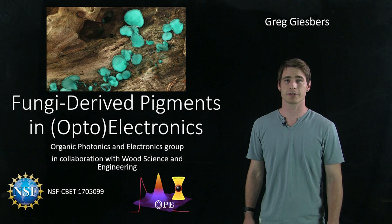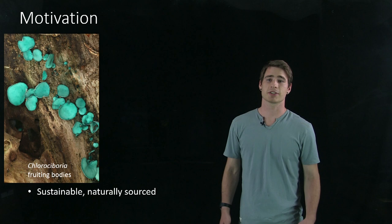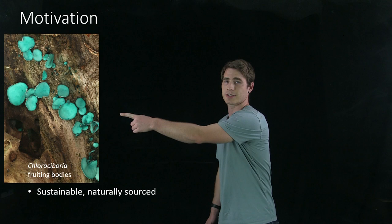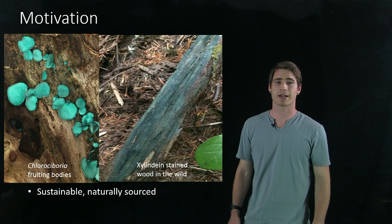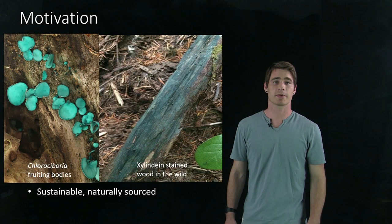So why study fungi-derived pigments? First of all, this is a sustainable and naturally sourced material. You can see what the fungus looks like in the wild here. It has this nice blue-green color from the pigment itself. This pigment is called xylundine, and here's another example of what a piece of wood in the wild looks like once it's been stained with this pigment created by this fungus.